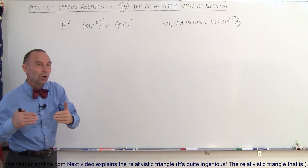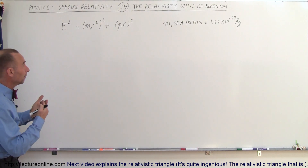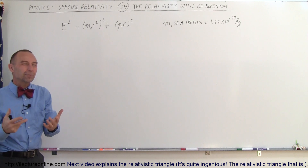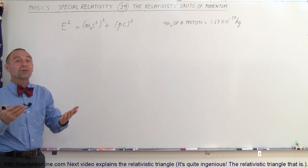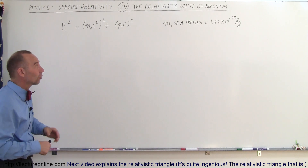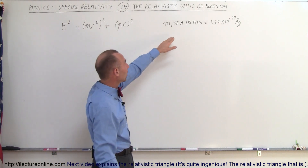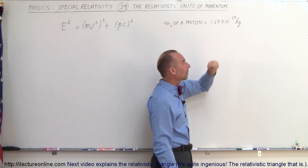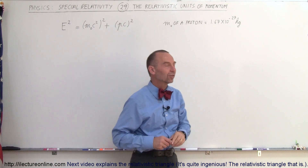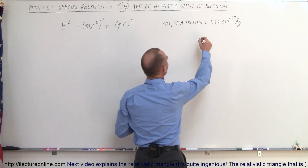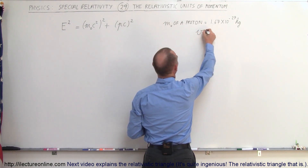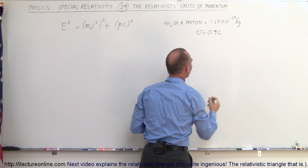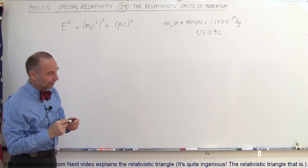We're going to show you what the units for momentum look like, and then we'll actually do a little example problem to show you how to find the momentum of an object. We have a proton with a rest mass equal to 1.67 times 10 to the minus 27 kilograms, and the velocity of that proton is equal to 0.9 times the speed of light — 90% the speed of light.